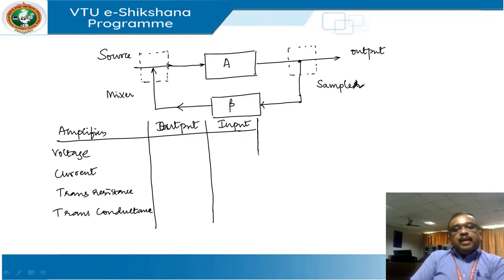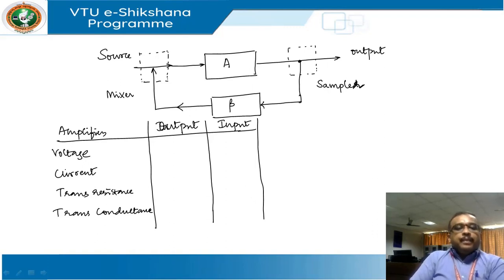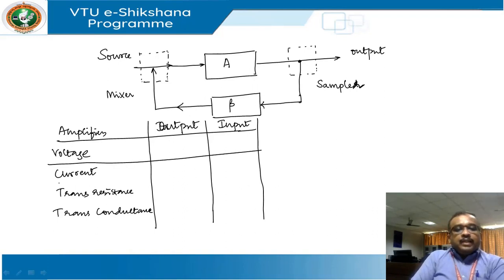When giving names to topologies, the first word comes from the output side (sampling), and the second word comes from the input side (mixing). So let us write the input and output quantities available for each amplifier type.